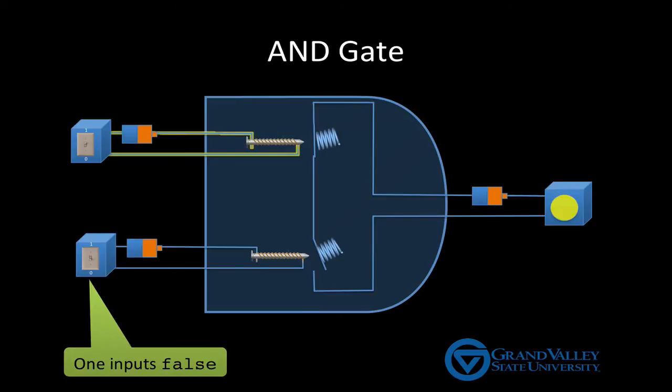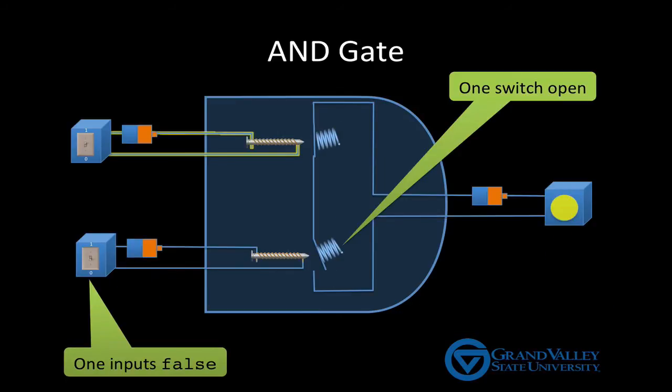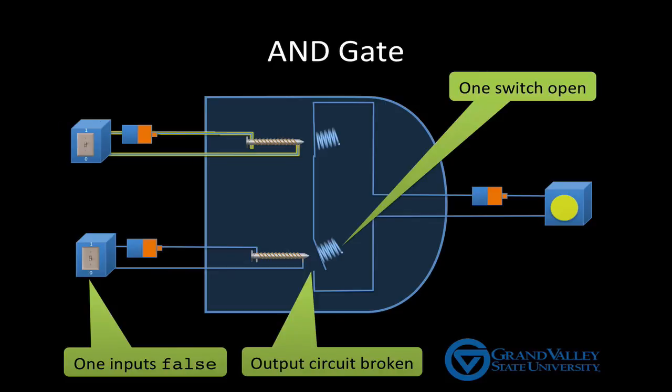If either input is FALSE, then one of the output switches is OPEN, which breaks the output circuit, producing a logical FALSE.